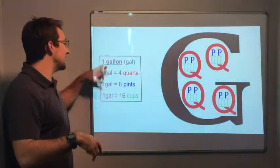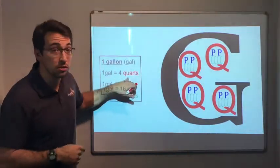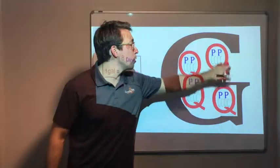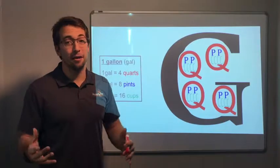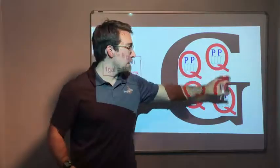Okay, so if we take that all the way up to the gallon, one gallon is four quarts. One gallon is eight pints. Two, four, six, eight. And then one gallon is 16 cups. Four, eight, twelve, sixteen.